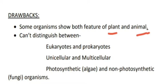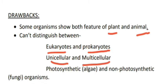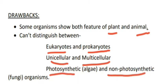However, the two kingdom classification had drawbacks. First, they could not differentiate between eukaryotes and prokaryotes. Second, unicellular and multicellular organisms were not distinguished. Third, photosynthetic and non-photosynthetic organisms could not be separated. These were the major drawbacks of the two kingdom classification.